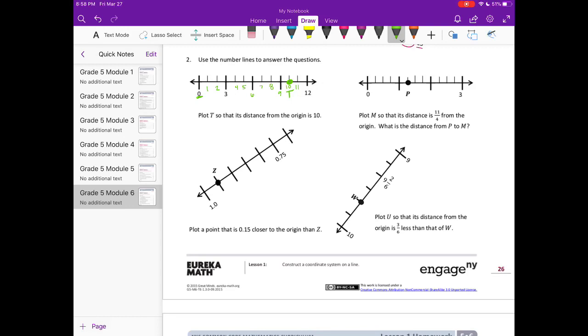Plot M so that the distance is 11 fourths from the origin. What is the distance of P to M? So if we're at 0, 1, 2, 3, 4. If we are working with fourths, this would be 2 and 3 fourths. So this is 3, then this would be 1, and 2, and then we have 1 fourth, 2 fourths, 3 fourths. Then we have 1.